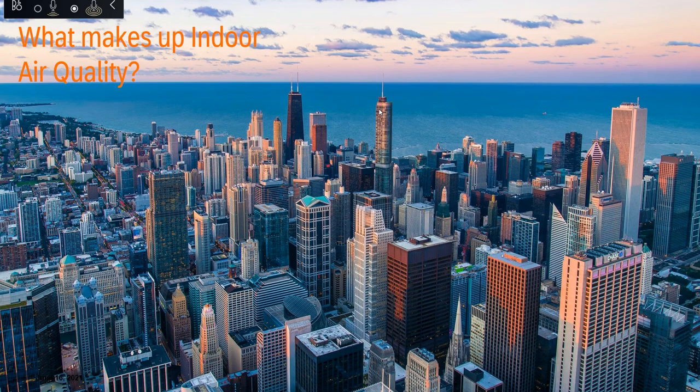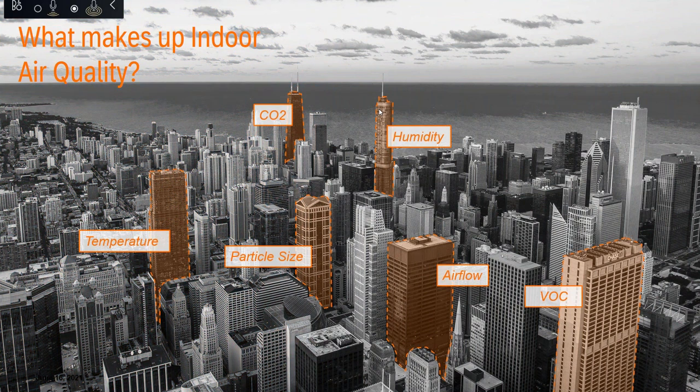Let's scratch the surface of indoor air quality. Over the past year and a half, we've seen hundreds of webinars on what indoor air quality is and the importance behind it. Generally speaking, when we're talking about indoor air quality, we really like to talk about six main metrics. We want to maintain and monitor temperature, CO2 levels — as we breathe in and exhale, we exhale CO2 — humidity and moisture content within our spaces, and particle size, which is also really important.